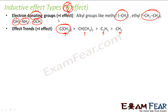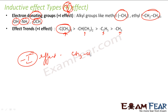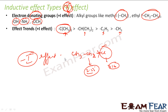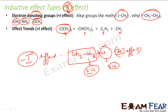The minus I effect is when a group withdraws electrons. For example, in CH3–CH2–CHCl: carbon electronegativity is 2.55 and chlorine is 3.16, so there is a difference in electronegativity. Chlorine attracts electrons toward itself, giving it a minus I effect — it is subtracting electrons from the system.